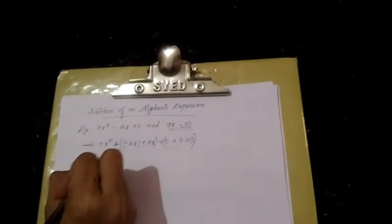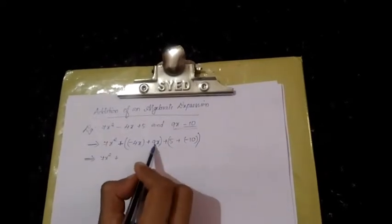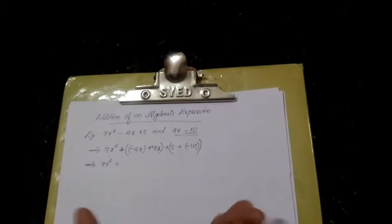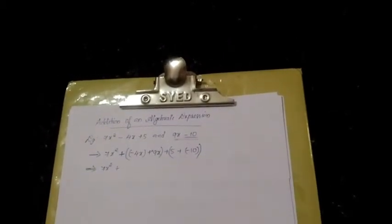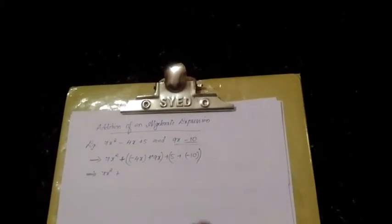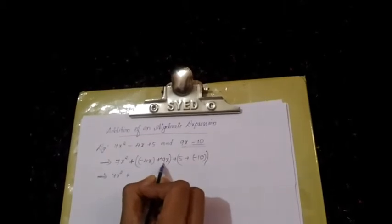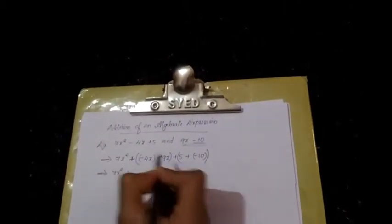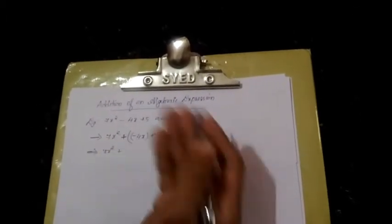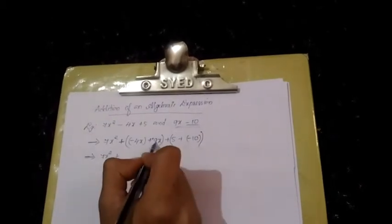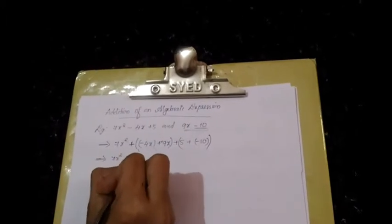So, 7x squared plus... This is addition of different sign. 9 positive, 4 negative, right? Addition of different sign - subtract the smaller number from the larger number and put the larger number sign. So plus 5x.